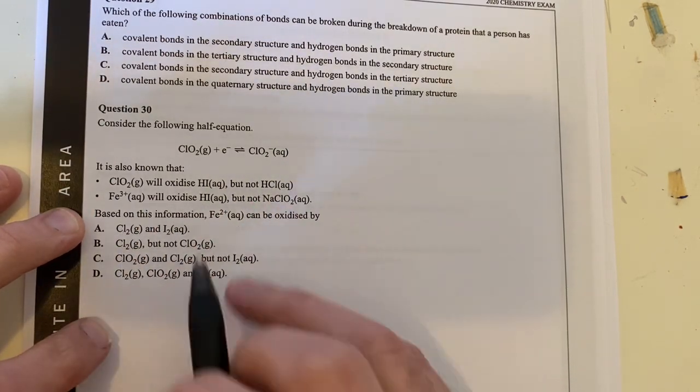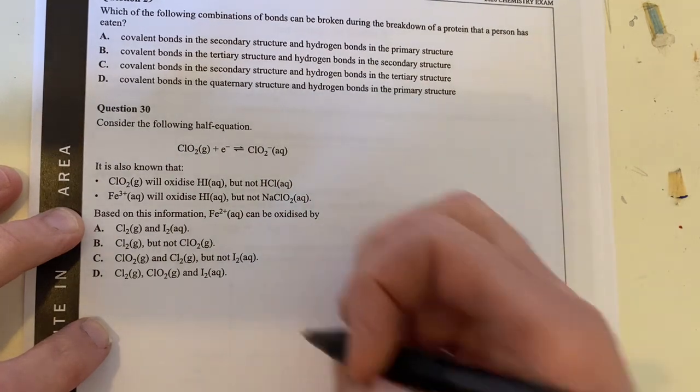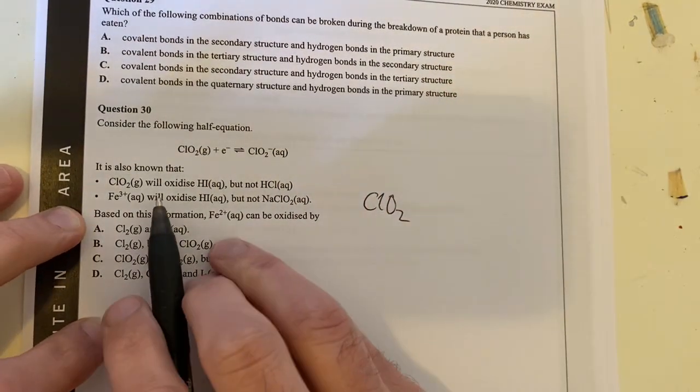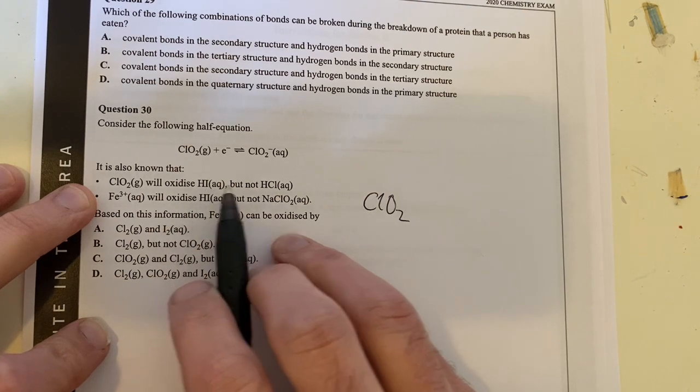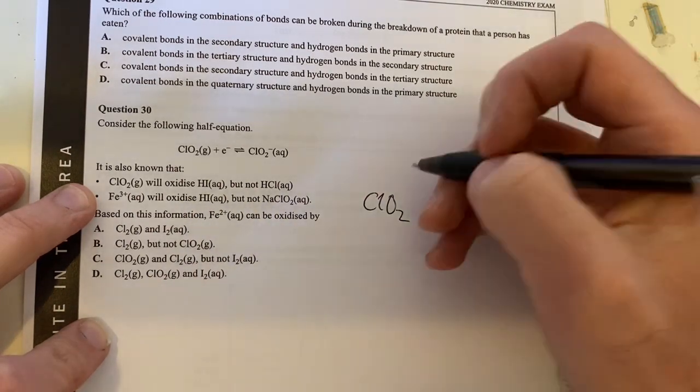So what we need to do is from this information, get an electrochemical series happening. I've got ClO2, I know that that is going to be able to oxidize I negative, not Cl negative. So it's going to oxidize this, but not that.